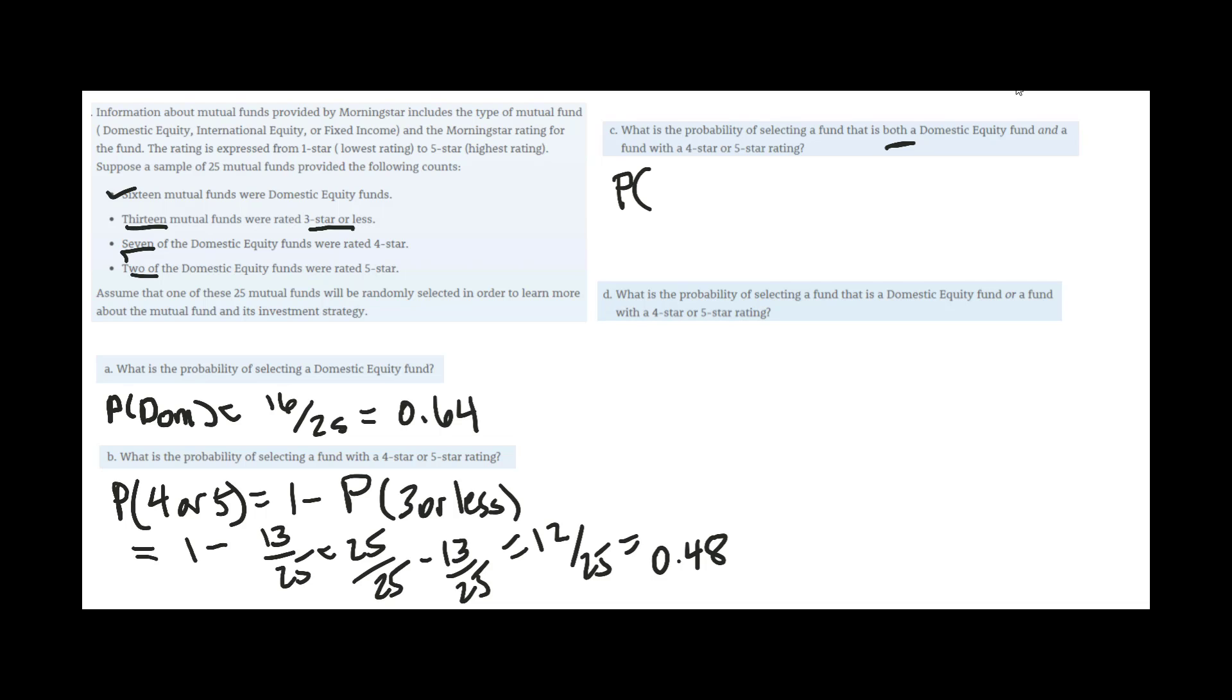So in other words, the probability of both domestic equity and, which is the intersection of the 4 or 5, would be the total, the 7 plus 2, 9 out of 25, or 0.36.